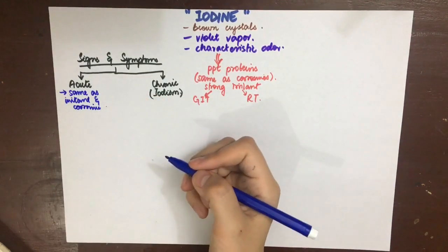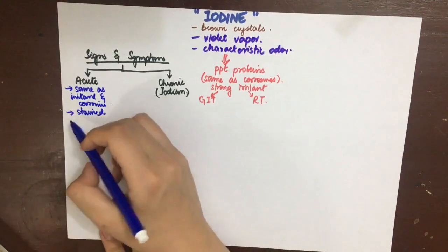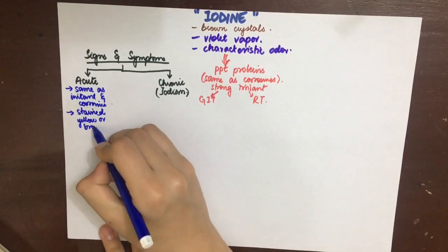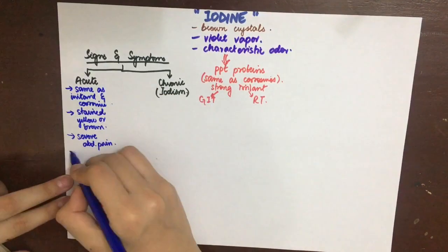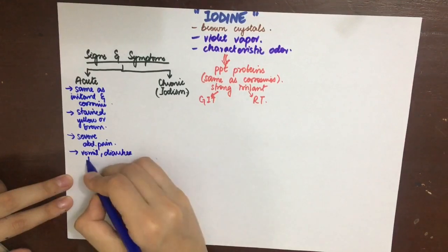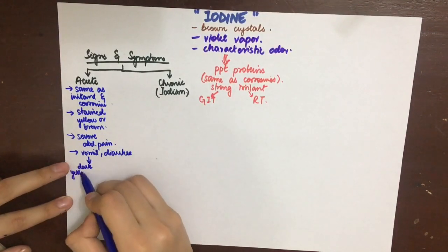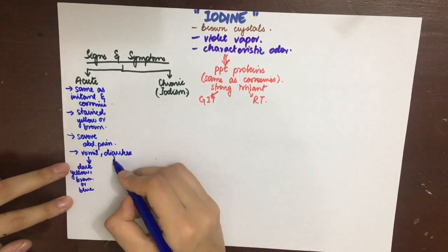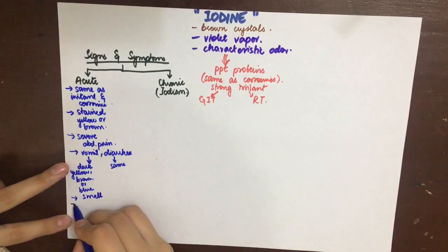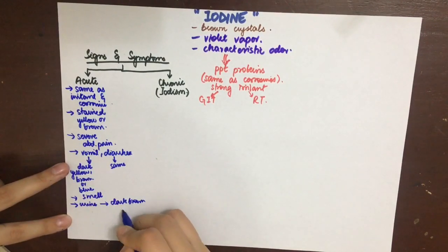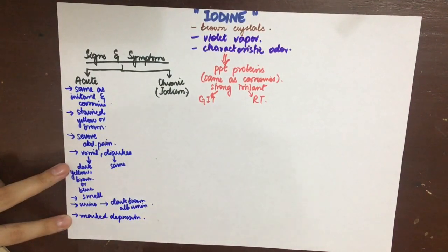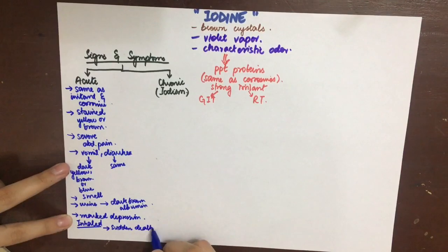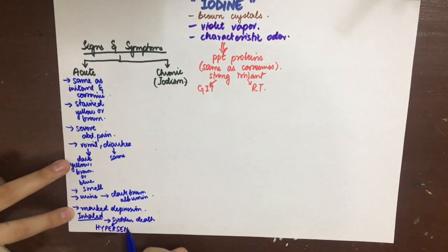Acute poisoning symptoms include pain, corrosion of the mouth and GI tract, and thirst. Yellow or brown staining of the mouth is seen, along with severe abdominal pain, vomiting and diarrhea. The vomitus and stool contain dark yellow-brown or blue-colored material. A characteristic smell can be observed, and the urine is dark brown in color and contains albumin.